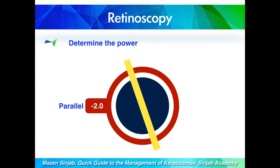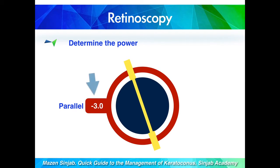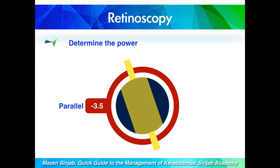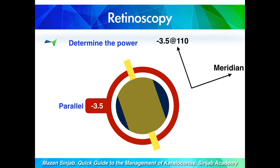After determining the axis, I determine the power by manipulating the sphere — increasing from minus 2 to minus 3. The streak becomes clearer, sharper, and narrower. When I reach minus 3.5, the streak becomes dim and wide, indicating the neutral point. So the axis is 110, but the meridian is 20. This resembles using a minus 3.5 diopter cylinder oriented at 110 degrees to give its effect at the 20 degree meridian being tested.